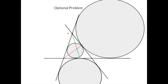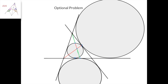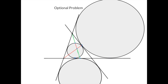This is the optional problem. We have a triangle, and this is its Nagel point, meaning that these are the lines connecting the vertex of the triangle and the opposing tangency point of the excircle. Let this line intersect the incircle at a point. We have to prove that this green length equals this green length. Let's call this segment x, this segment z, and this segment y. We have to prove that x equals y.